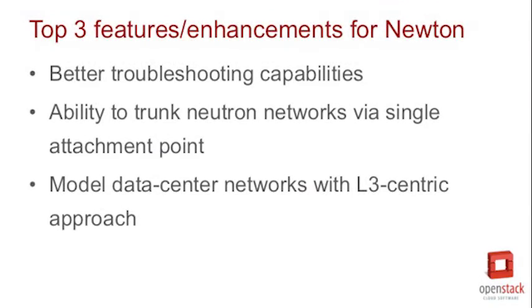What are the top three priorities for new features or enhancements this cycle? It's difficult to come up with just three, but you can expect three major enhancements at the end of Newton. One is better troubleshooting capabilities, which is beneficial for all stakeholders. Another key achievement, particularly NFV-focused, is providing the ability to trunk many Neutron networks together and expose them to a virtual function via a single attachment point — this will also become relevant for bare metal deployments like Ironic. Finally, we've been working for a few cycles on providing a new way to model data center networks in an L3-centric fashion, which is a big shift from the way Neutron has been operating until now.